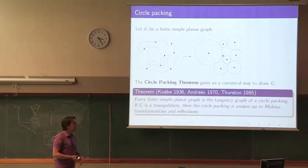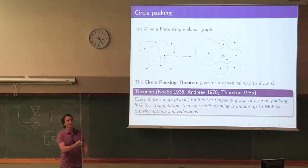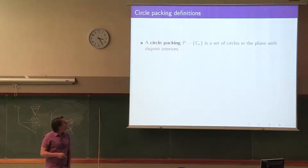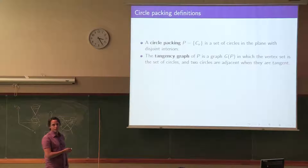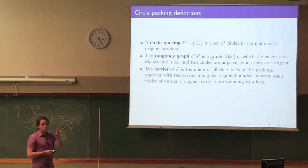The power of this theorem is of course a converse: if you have any planar combinatorial structure, you can actually find a circle packing representation. When your graph is a triangulation, your packing is unique up to Möbius transformations or reflections. The carrier is, in the case of a triangulation, the union of all circles plus the interstices — the spaces between three mutually tangent circles.